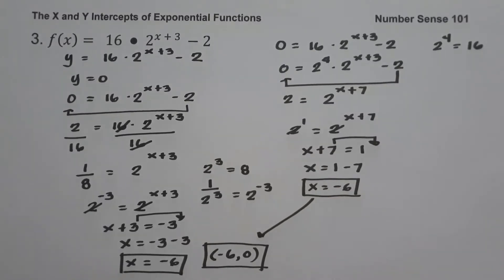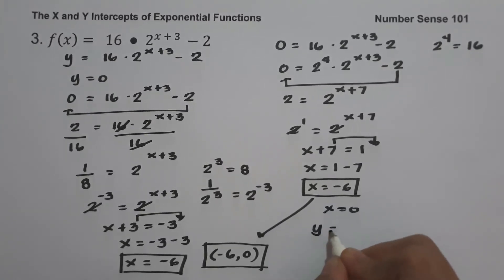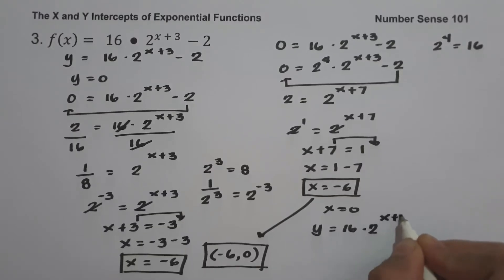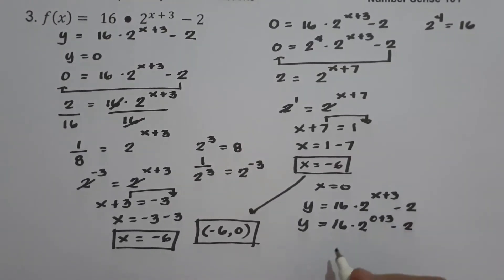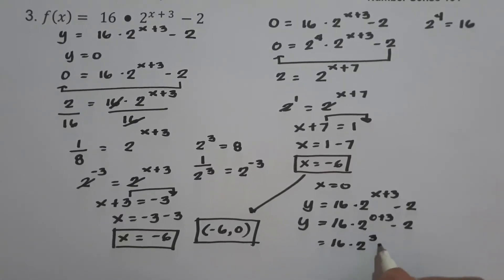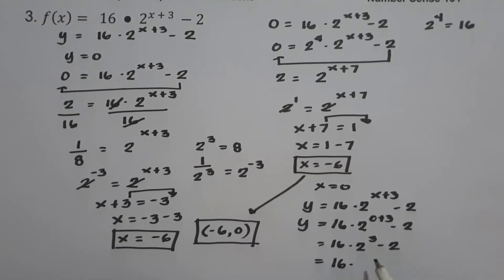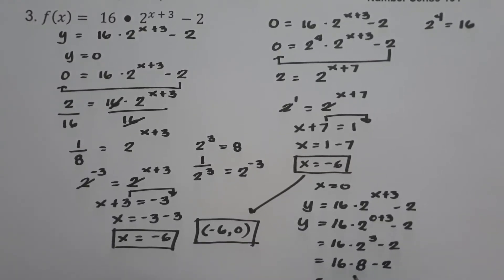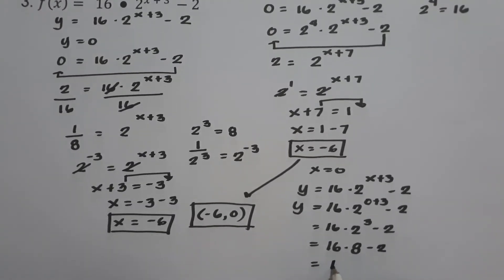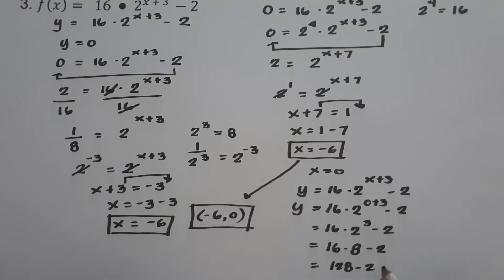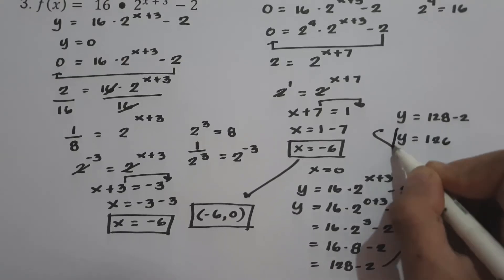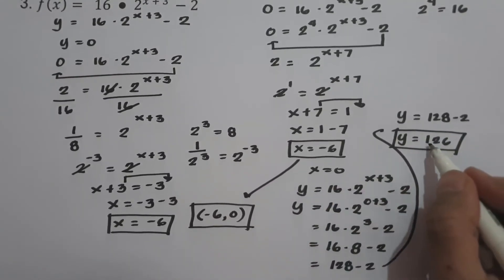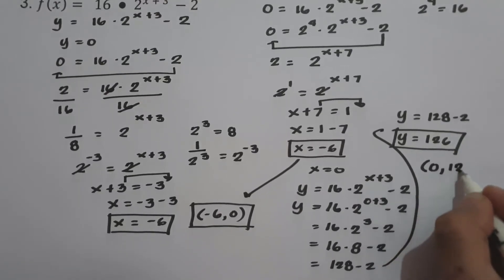To find the y-intercept, let us set x equal to 0. We have y equals 16 times 2 raised to x plus 3 minus 2, so y equals 16 times 2 raised to 0 plus 3 minus 2. Simplifying: 0 plus 3 is 3, so 16 times 2 raised to 3 minus 2. Since 2 raised to 3 is 8, we get 16 times 8 minus 2, which is 128 minus 2, giving y equals 126. Since x is 0 and y is 126, our y-intercept is (0, 126).